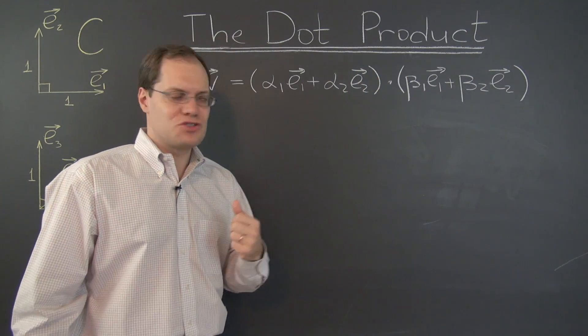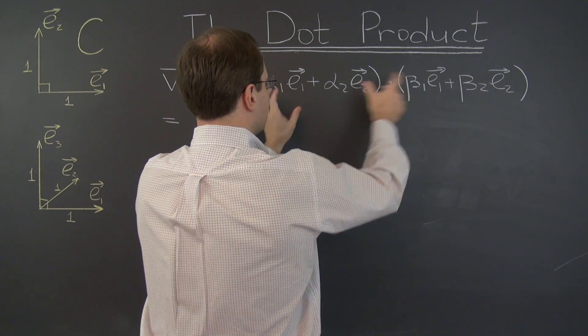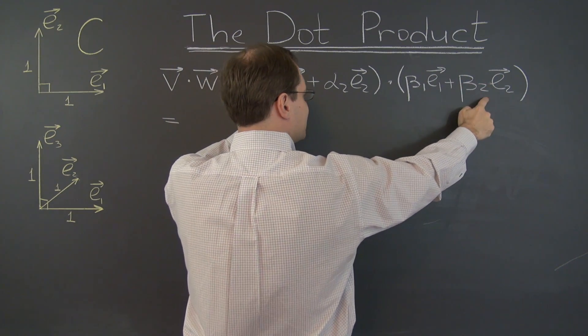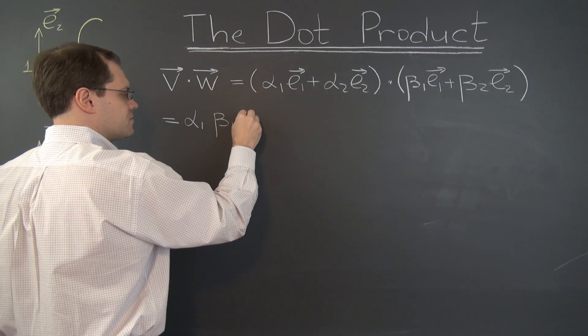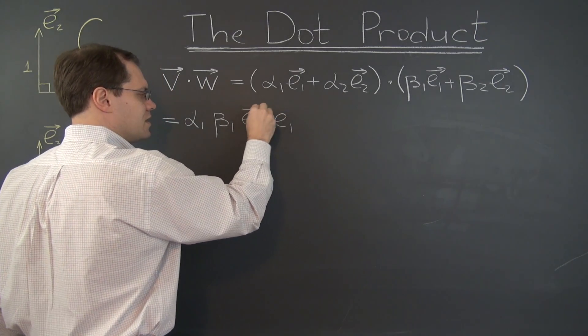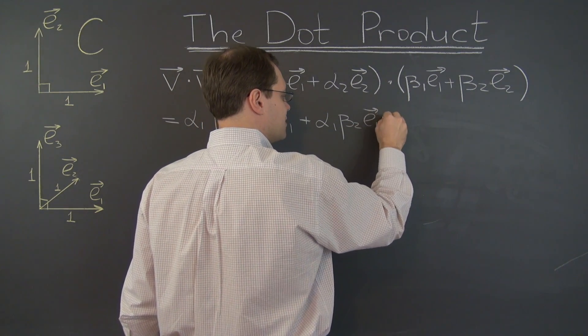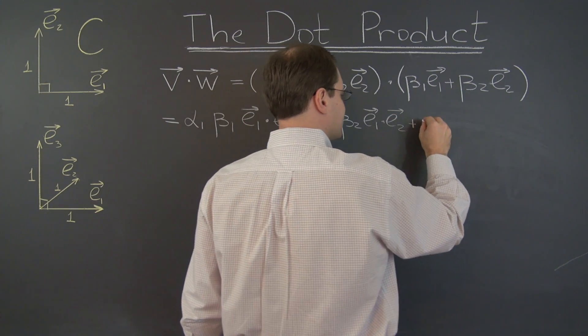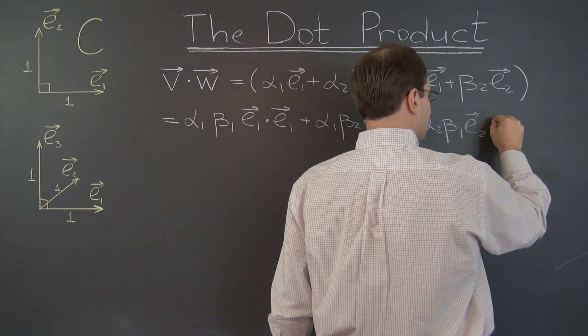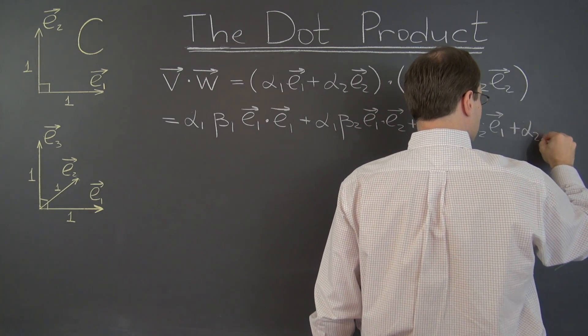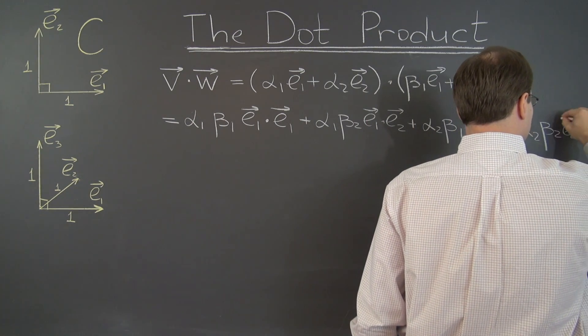Now that we have the distributive law, which we have established, we'll multiply it out. We'll foil it out. We'll foil it. And here's what we have. Combining these two terms, so it's foiling. This times this, plus this times this, plus this times this, plus this times this. So we have alpha 1 beta 1, multiplying E1 dotted with E1, plus alpha 1 beta 2, multiplying E1 dotted with E2, plus alpha 2 beta 1, multiplying E2 dotted with E1. And finally, plus alpha 2 beta 2. Now I have to be careful with space. It will barely fit. E2 dotted with E2. Alright.